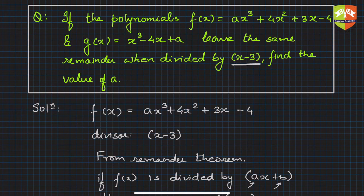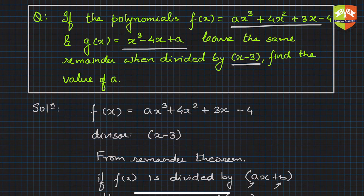So this is the divisor, and they leave the same remainder when both of them are divided by (x - 3). You have to find out the value of a.